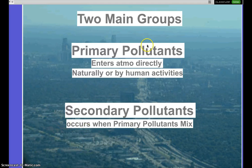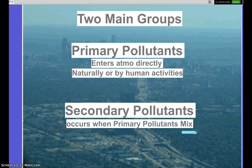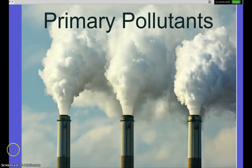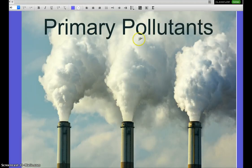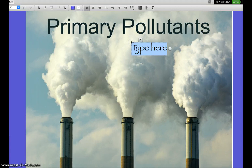There are two main groups of pollutants. Primary pollutants enter the atmosphere directly — either naturally or from human sources. Secondary pollutants form when primary pollutants mix with each other or with something else. Underline the word 'mix.' We're going to talk about six primary pollutants now, and when those mix, they form secondary pollutants.